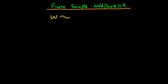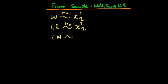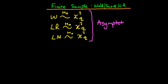We said that the Wald statistic was, under H0 being true, chi-squared distributed with q degrees of freedom — but this only holds asymptotically. Similarly, the likelihood ratio statistic, under H0 being true, is also chi-squared with q degrees of freedom. And finally, the LM statistic, under H0 being true, is also chi-squared distributed with q degrees of freedom. Each of these properties only holds asymptotically — in the circumstance where the sample size tends to infinity.